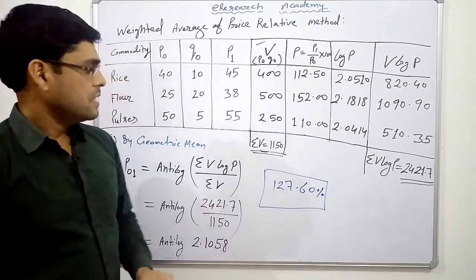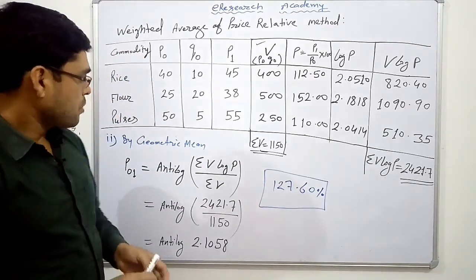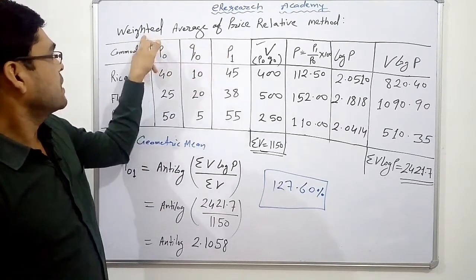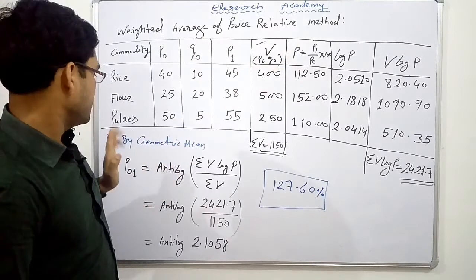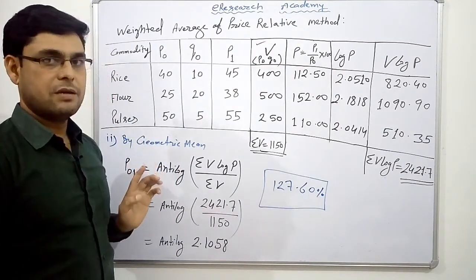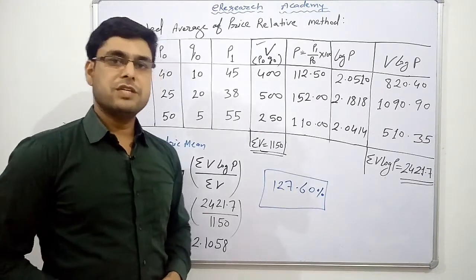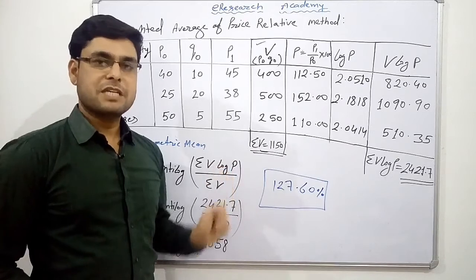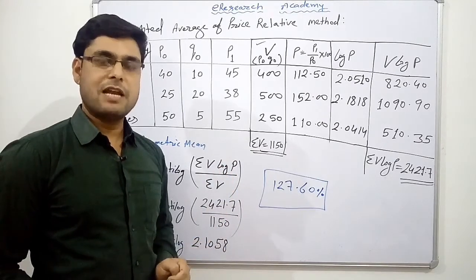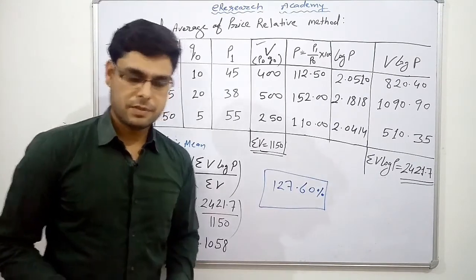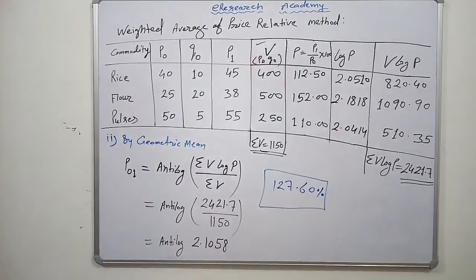So friends, this was the method and procedure to find out the price index under the weighted average of price relative method by arithmetic mean and geometric mean. Thank you very much for watching this video. If you have not subscribed to this channel so far, please subscribe, share it with your friends, and give your valuable comments. Have a nice day ahead. God bless you.